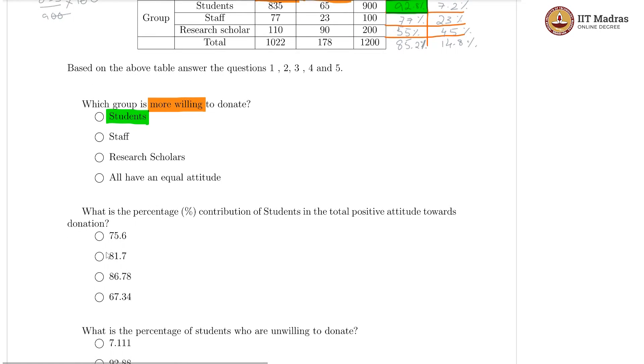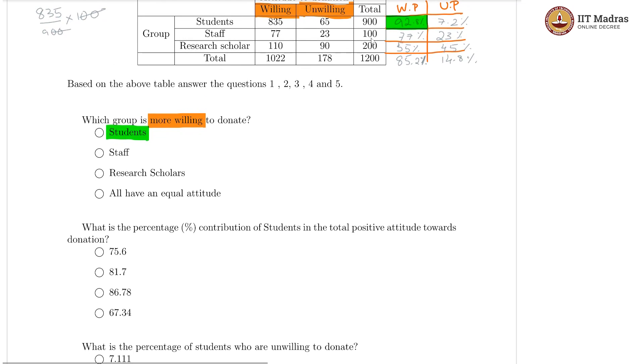Then we have: what is the percentage contribution of students in the total positive attitude towards donation? Now, this is where we have to be a little bit careful in what we are doing. The percentage contribution of students in the total positive attitude is not this 92.8 percent. It is in fact 835 as a percentage of 1022. Of the total willing candidates, how much percentage is being contributed by students? That would be 835 divided by 1022 into 100, and this comes to about roughly 81.7 percent. So, they are asking the percentage contribution, which means our answer is 81.7.